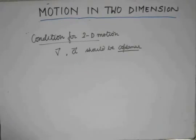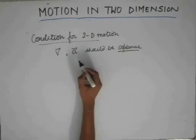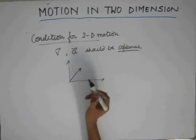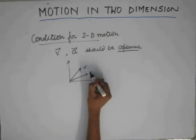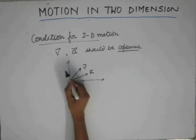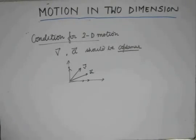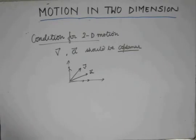To solve questions on two-dimensional motion, what we do is we resolve the velocity vector and the acceleration vector into two perpendicular directions. If we have a velocity vector and an acceleration vector, we resolve each of them into two perpendicular directions. As we have studied in vectors, if a vector is resolved into two perpendicular components, we can deal with each component separately and the calculations become pretty simple. That is the reason why we choose two perpendicular axes. Now let's solve some problems on 2D motion.